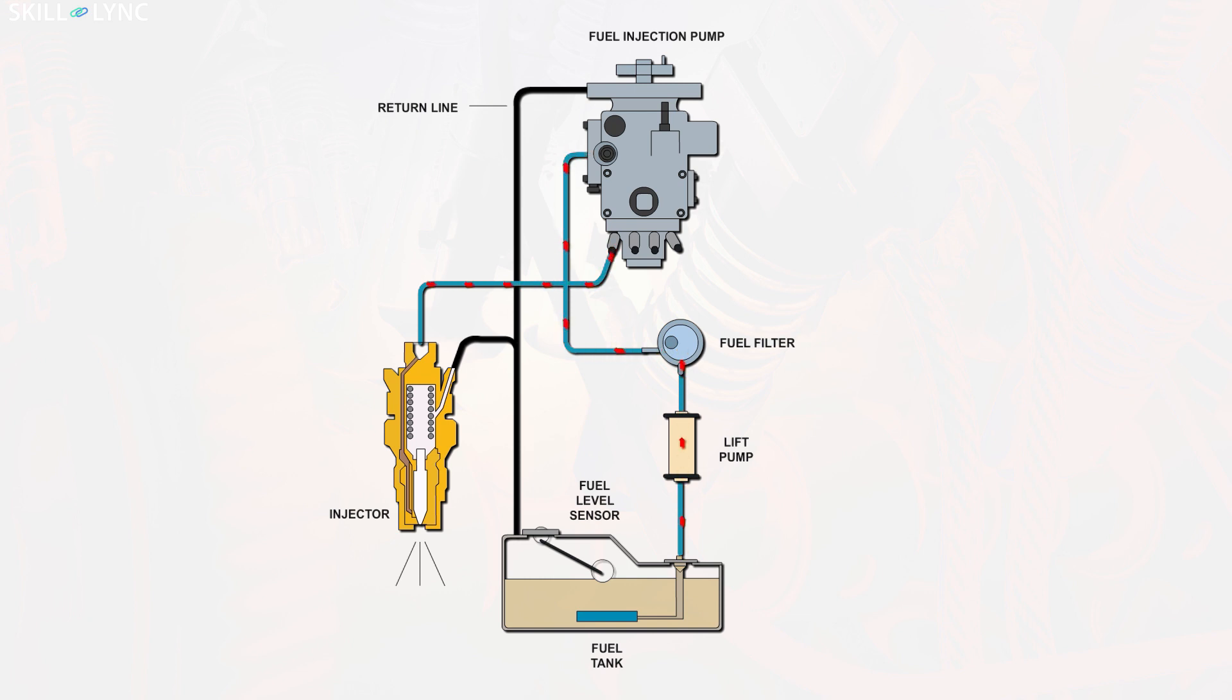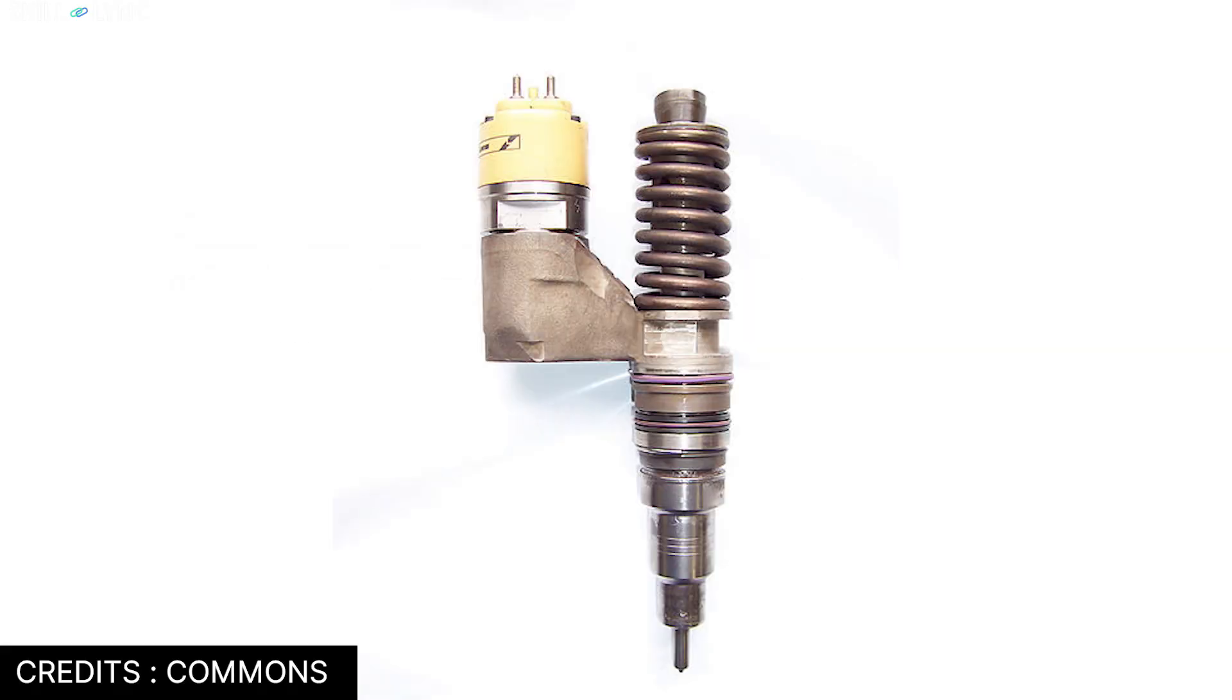The pressurized fuel is sent to the injection nozzle through high pressure lines. Transferring the pressurized fuel through narrow lines may result in complications. In order to avoid this, a unit injector system is used. A unit injector is a compact component which integrates the injection pump and the injection nozzle as a single unit, reducing the need for high pressure lines.